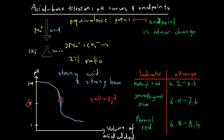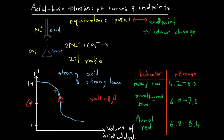We want to choose an indicator to add to the solution in the conical flask such that the solution changes colour at the equivalence point — so we choose an indicator where the end point is close to the equivalence point. By looking at the graph, the equivalence point occurs at a pH of 7. The pH drops very sharply near the equivalence point, making it easier to choose an appropriate indicator. The pH ranges for three indicators are listed: methyl red, bromothymol blue, and phenol red.